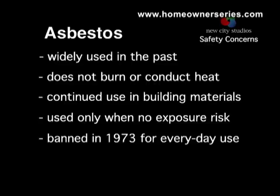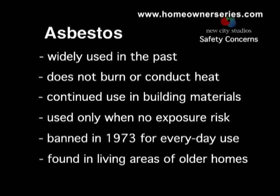Asbestos has been banned since 1973 for use in areas where fibers could be inhaled, such as popcorn ceilings. Asbestos may be found in some old attic insulation, flue pipes used to vent water heaters and furnaces, as a spray-on insulation coating for water pipes, and in old-style floor tiles.